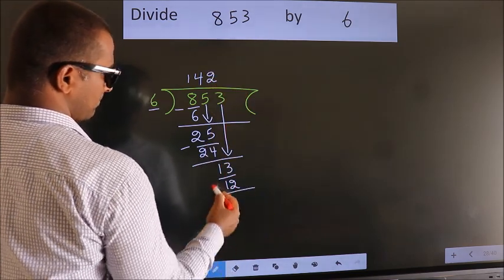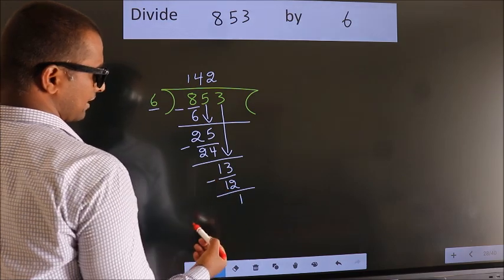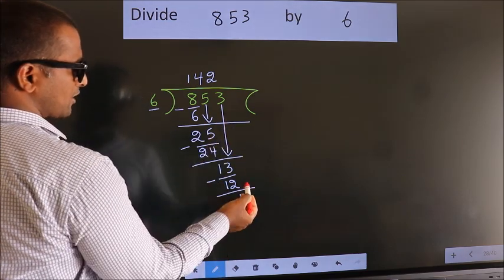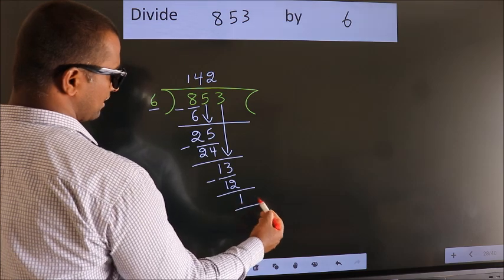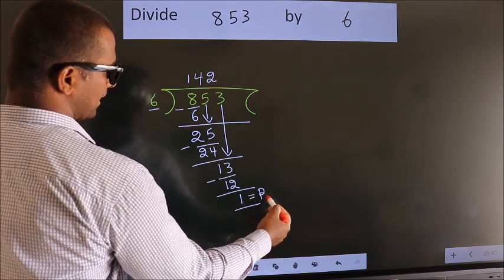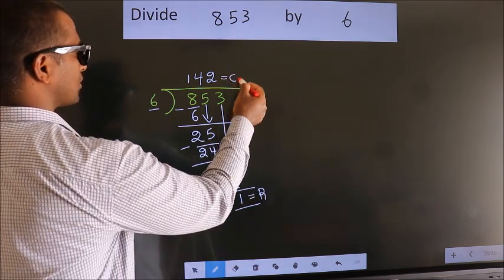Now we subtract. We get 1. No more numbers to bring down. So we stop here. This is our remainder. This is our quotient.